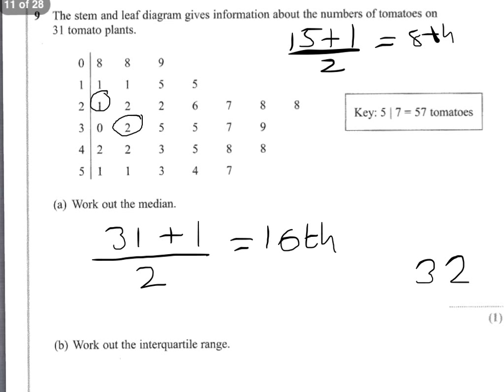Now the upper quartile will be the median of the 15 numbers above the median. So that will be the 8th score from the 5. So 1, 2, 3, 4, 5, 6, 7, 8. So the upper quartile will be 45.